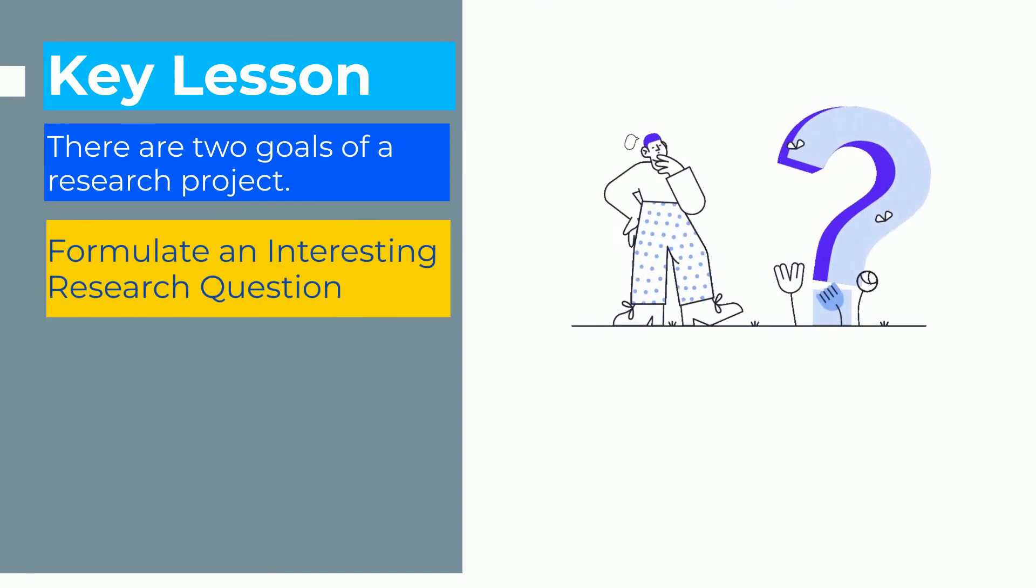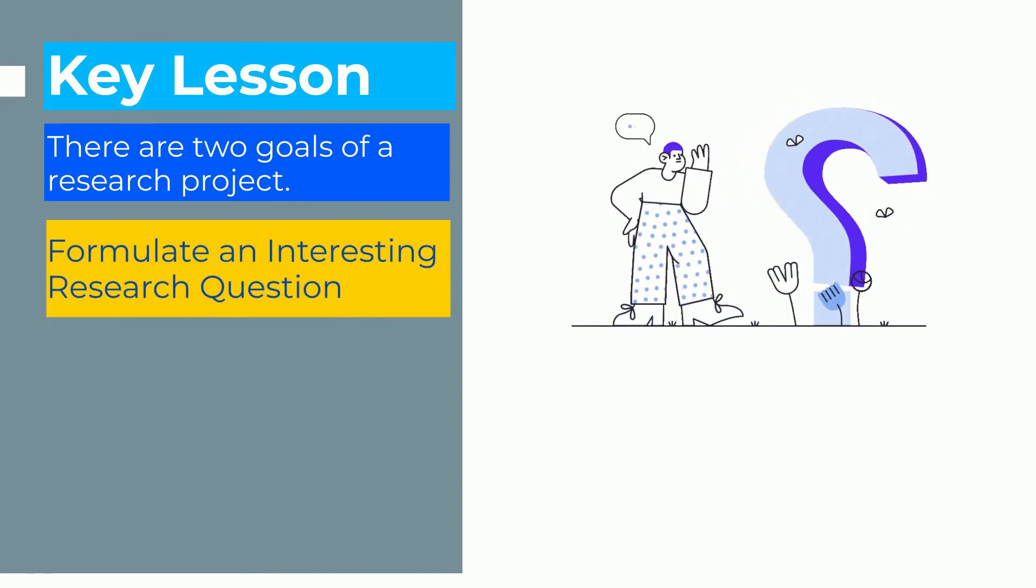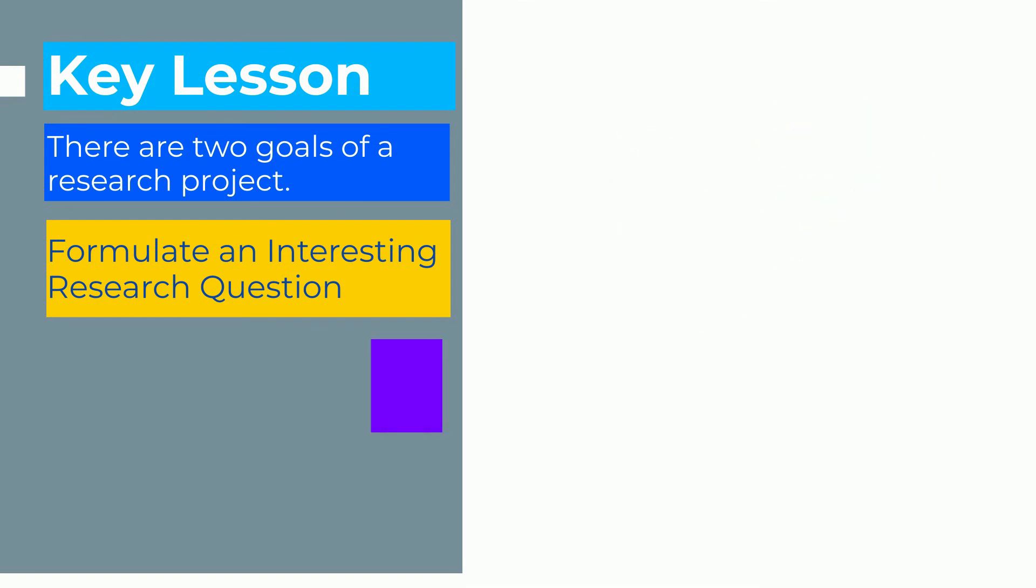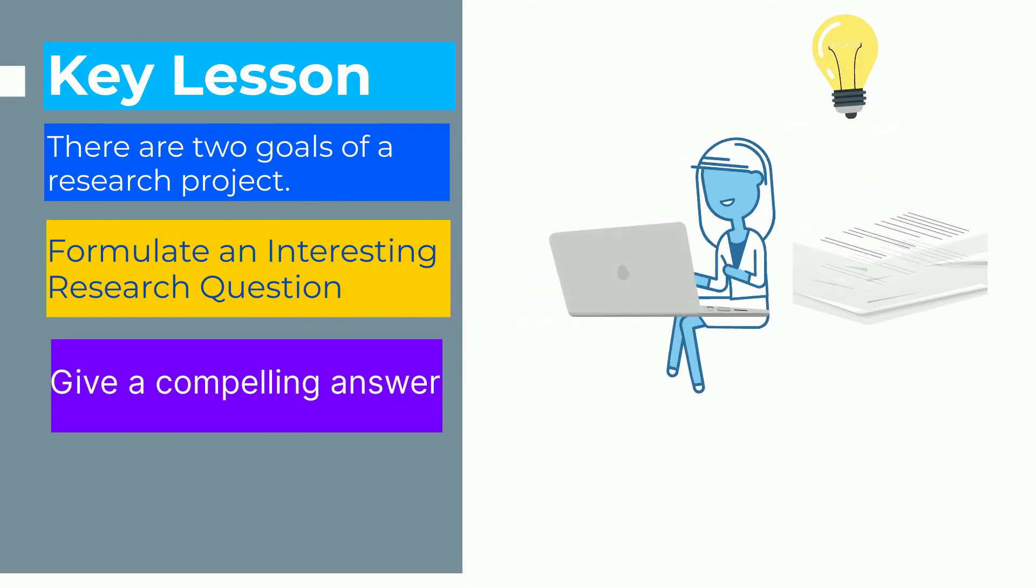So the key lessons of this video are that there are two goals of a research project. The first goal is to formulate an interesting research question. And the second goal is to design your research such that you can give a compelling answer. And the way to do this is to develop and balance these two points in parallel by going back and forth between your research question and your methodology to answer the question.